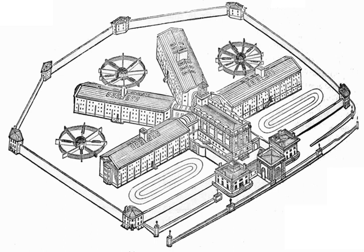Environmental criminology focuses on criminal patterns within particular built environments and analyzes the impacts of these external variables on people's cognitive behavior. It forms a part of criminology's positivist school in that it applies the scientific method to examine the society that causes crime.